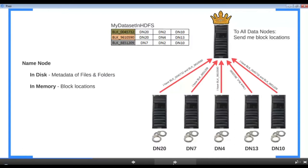Why doesn't the NameNode persist block location information? Because DataNodes already have that information — each DataNode knows the list of blocks it is responsible for. DataNodes and the NameNode are in constant communication. When the NameNode starts up, DataNodes connect and broadcast the list of blocks they're responsible for. The NameNode holds block locations in memory, not on disk, because persisting every change in a busy cluster would be a bottleneck.